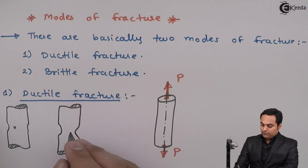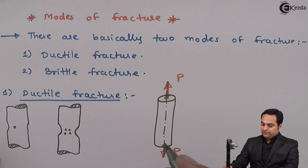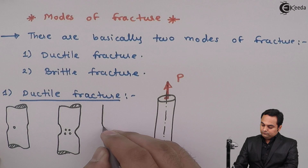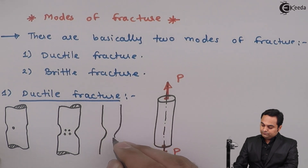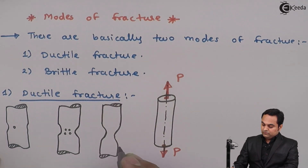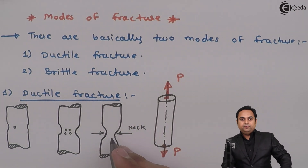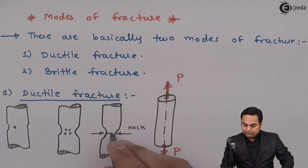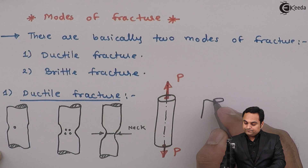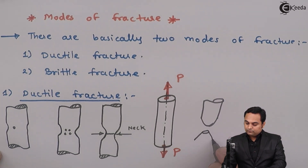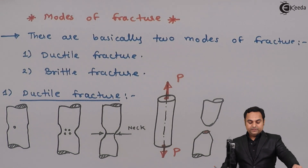In the next stage, more number of holes will appear inside the material, or if there are more holes, cracks will develop. Finally, the diameter will be reduced to a very small value. This region is called the neck, where the diameter has reduced to a minimum value. After this stage, cracks form and finally when the load is increased, the material will break.